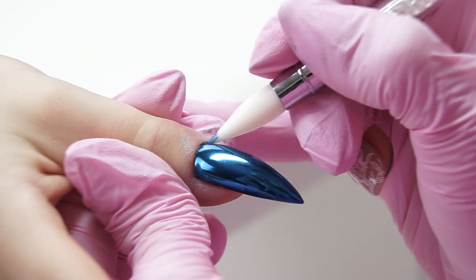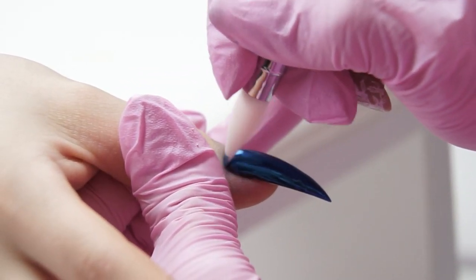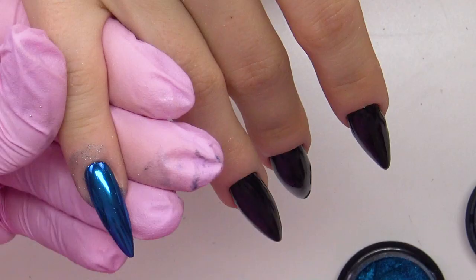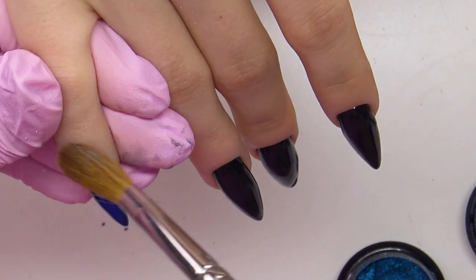Under the cuticle, I'm using a silicone brush, removing the leftover powder with a soft brush.